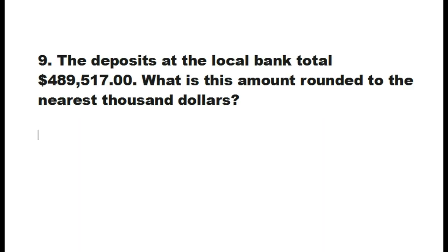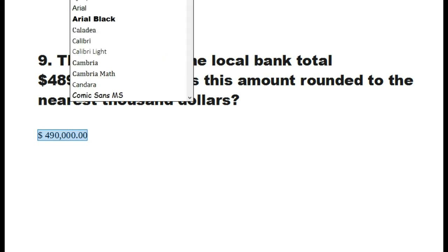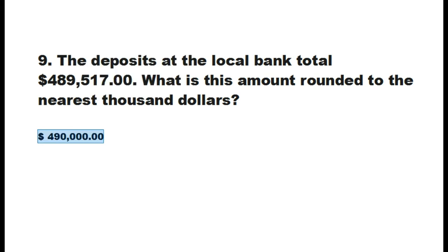Next, the deposits of a local bank total $489,517. What is this amount rounded to the nearest $1,000? So, the answer is $490,000.